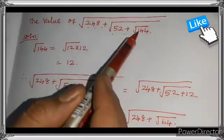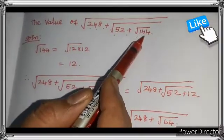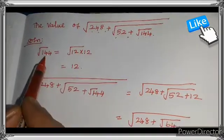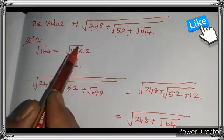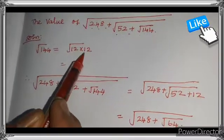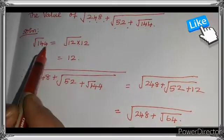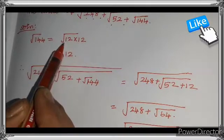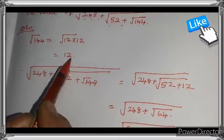So first I take the square root of 144. Square root of 144 equals 12 × 12. We multiply 12 by itself 2 times to get 144. Therefore, the square root of 144 is 12.